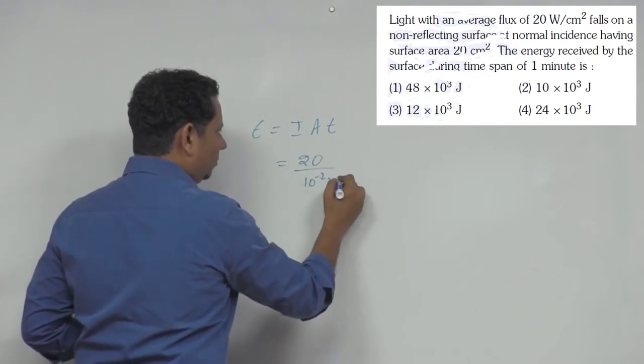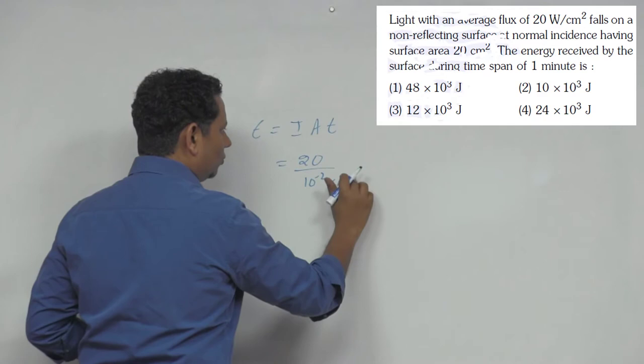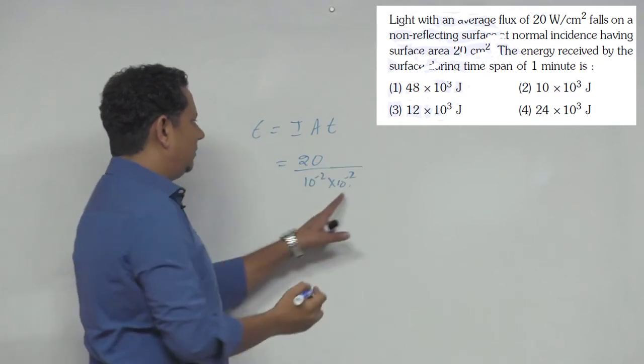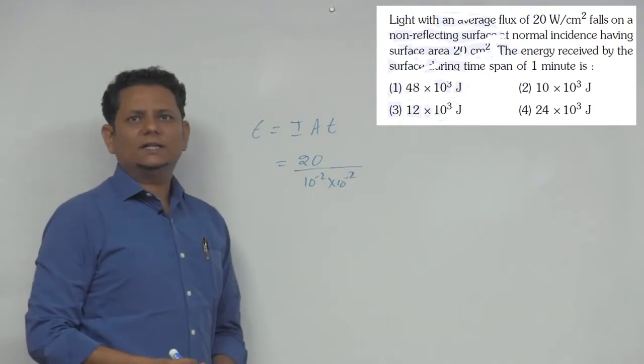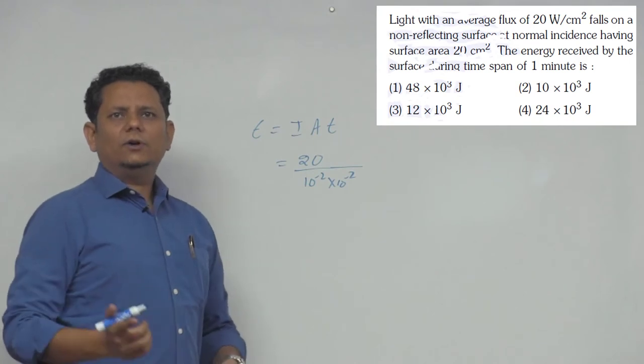So I equals 20 times 10⁻² times 10⁻². When we convert this to SI units, this comes in watts per meter square.